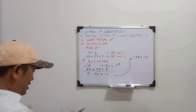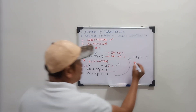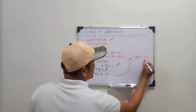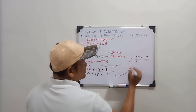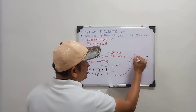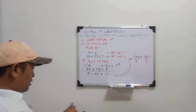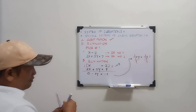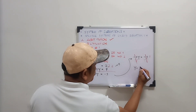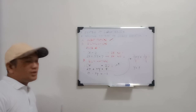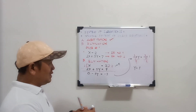So y is equal to 1. Easy, right? You just need to eliminate one variable, and you get y.